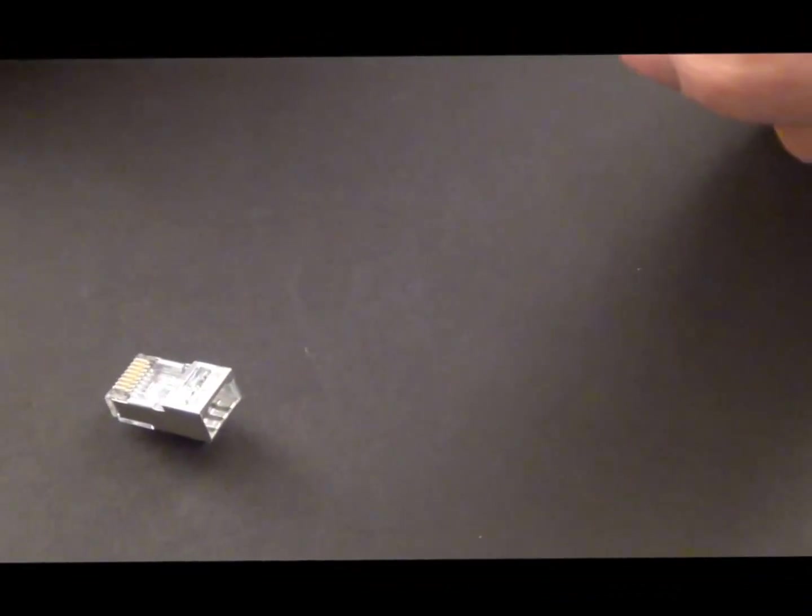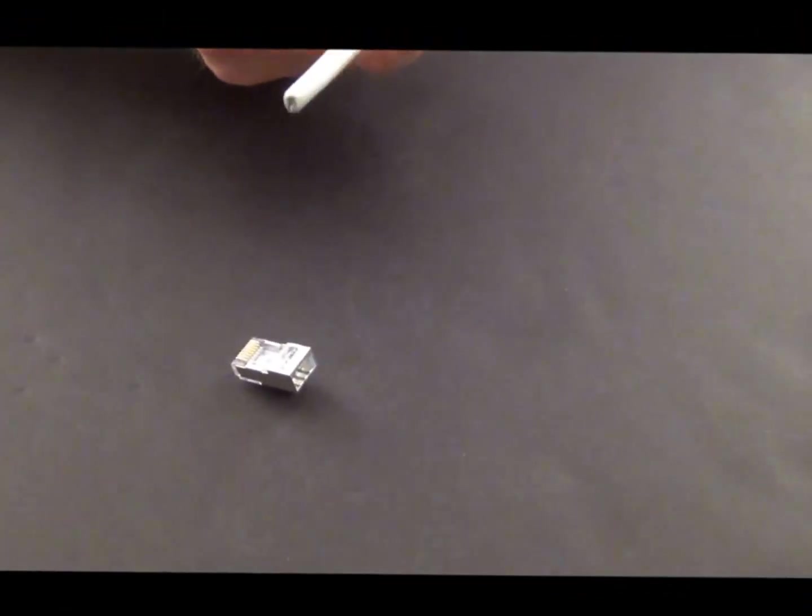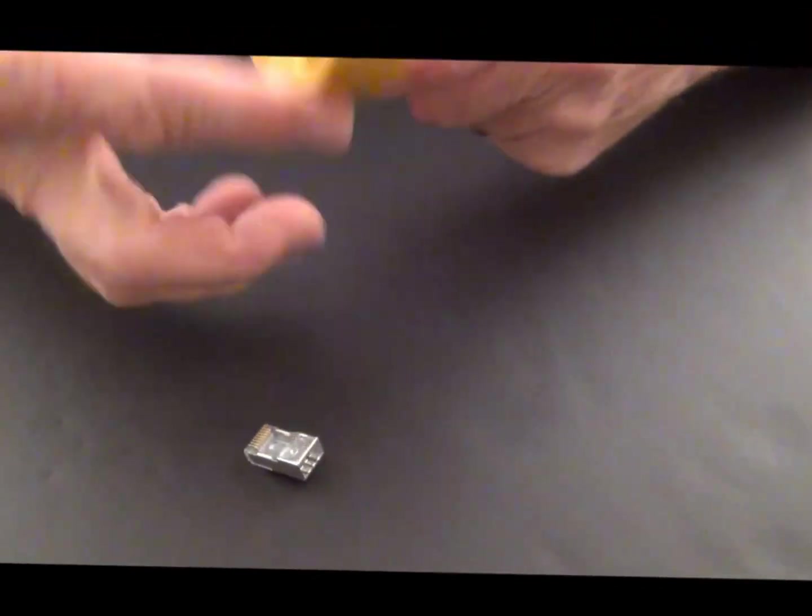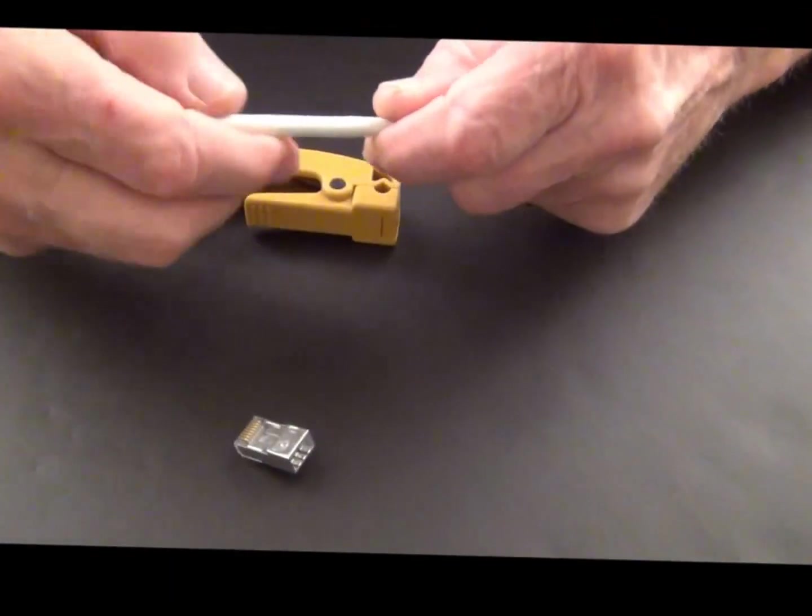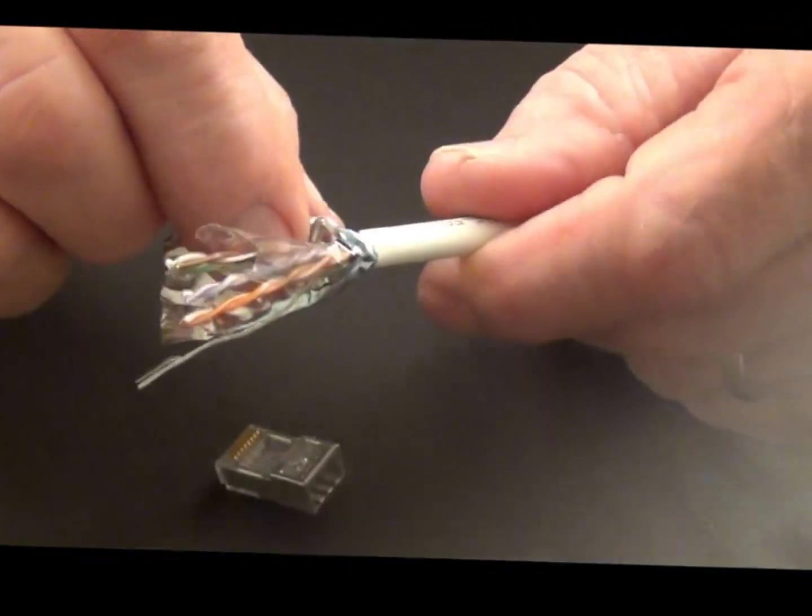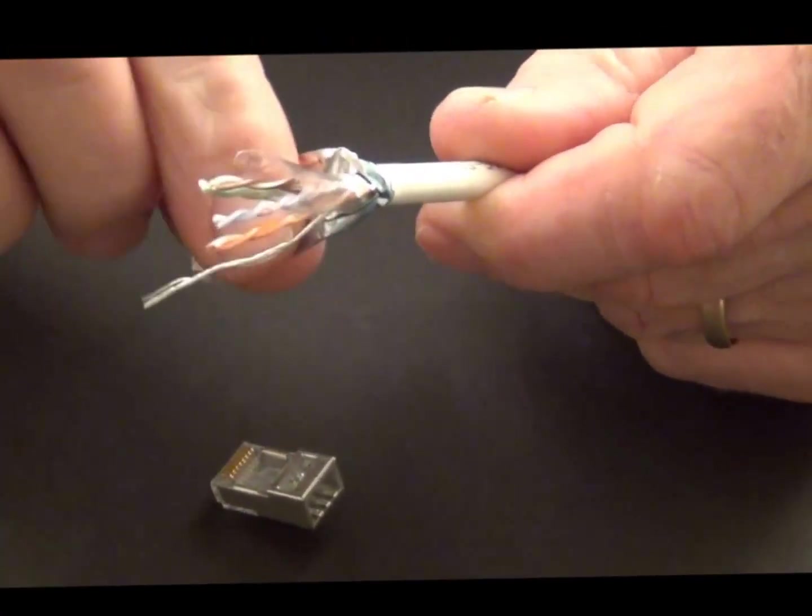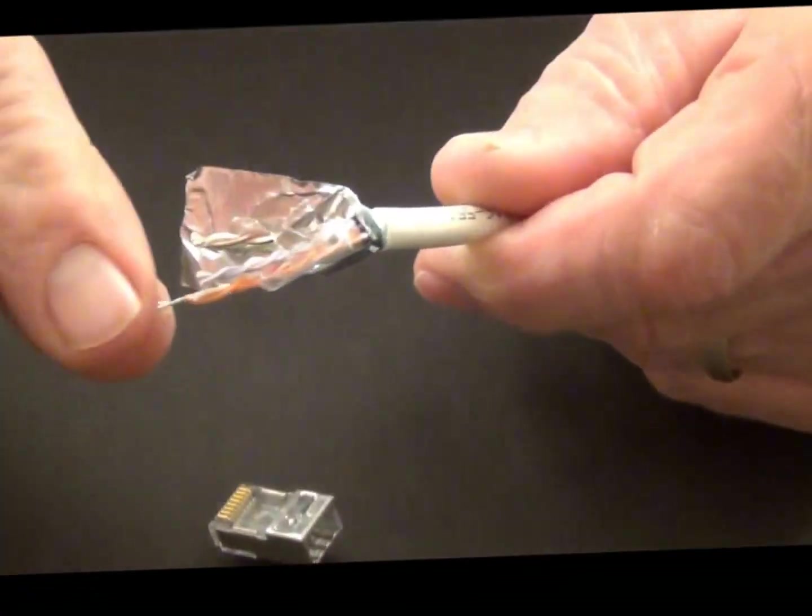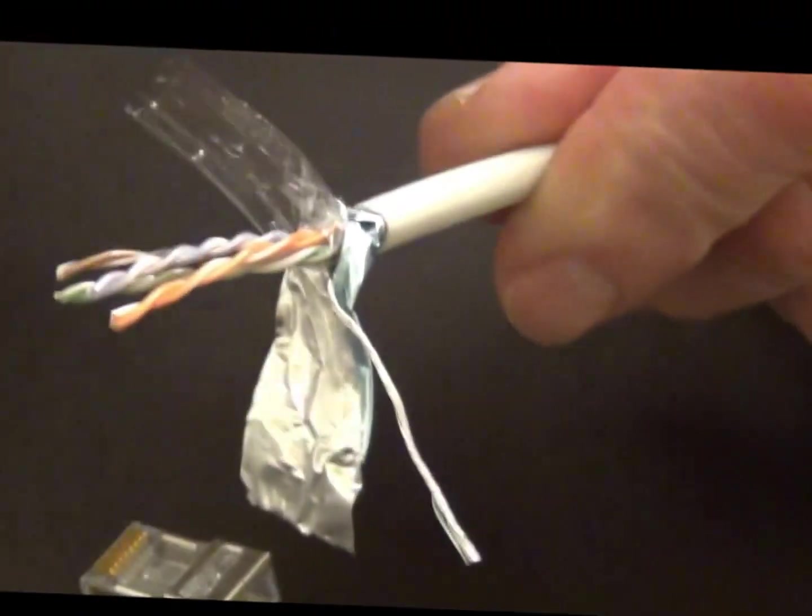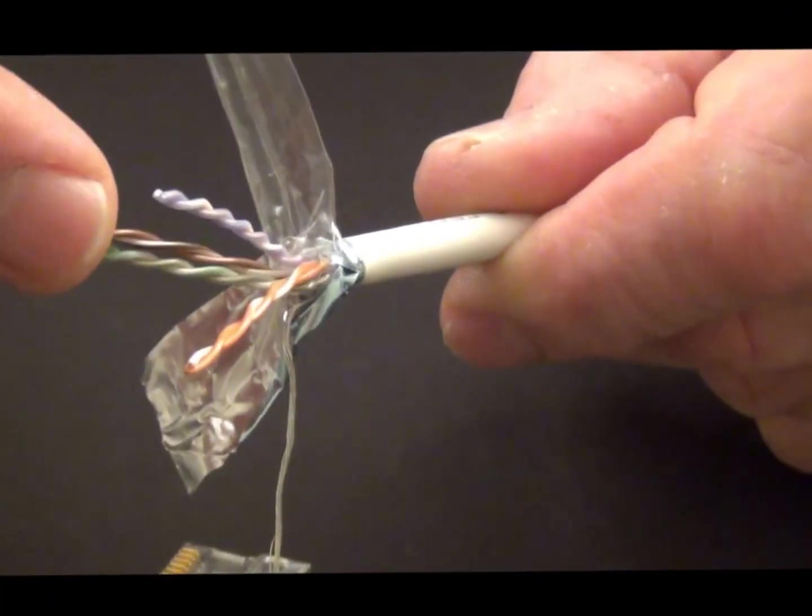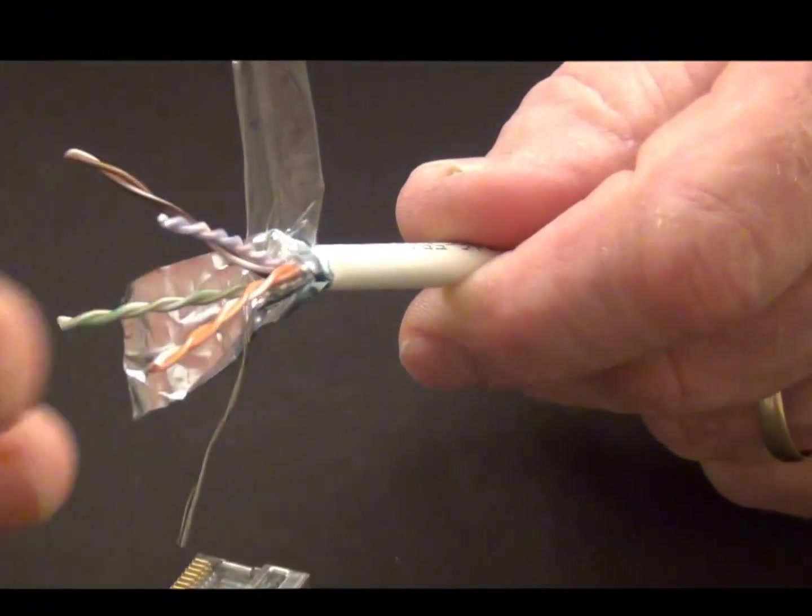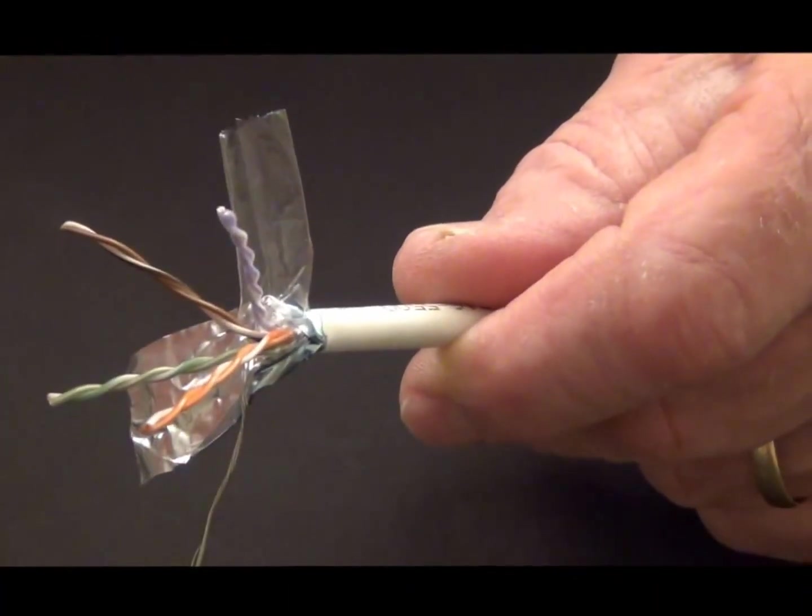So here's my Cat 5E cable. And the first thing you're going to want to do is to remove the jacket. So we're going to score the jacket and pop the cable and remove it and finish prepping the cable. Now before I do any cutting to the foil, I'm just going to sort of push it out of the way, still intact, my drain wire. And I'm going to have to remove the cellophane, take that down and remove it. And then we're going to lay these out like we normally do with any EZ connector, lay these pairs out to separate.